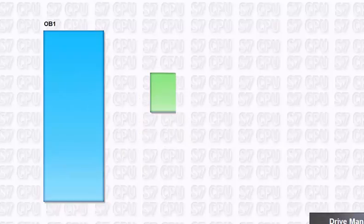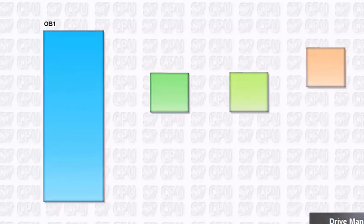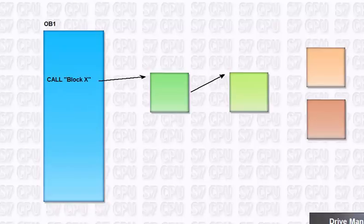The Step 7 block concept is predestined for the structured realization of this task. For processing the blocks, which control a technological or functional unit, they are called successively or stacked in an organization block.